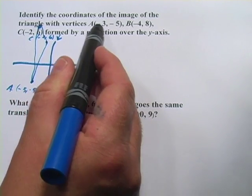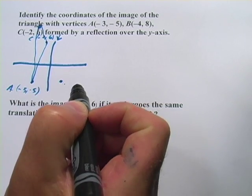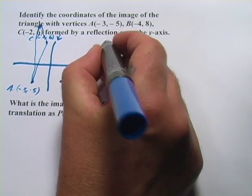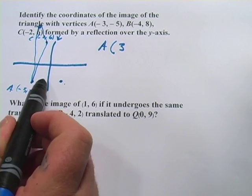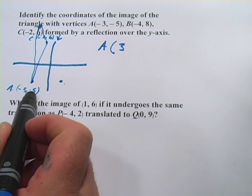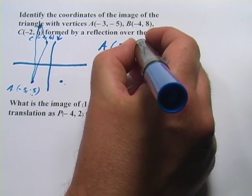So if this is a -3 over here, it's going to be a +3 over here. So the A point is going to be (3, -5). The easy part here is that when you're just reflecting over the y-axis, the y-coordinates don't change at all.